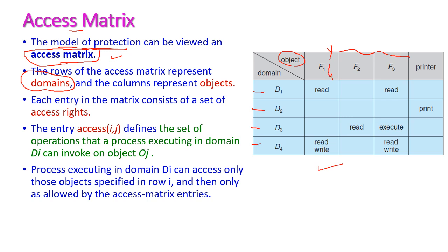An entry access(i,j) defines a set of operations that the process executing in domain Di can invoke on object Oj. That is, the process executing in domain Di can access only those objects specified in row i.